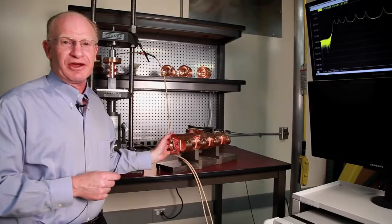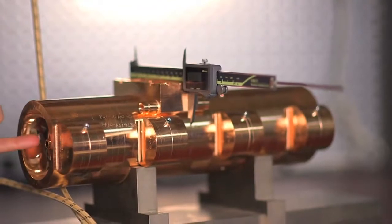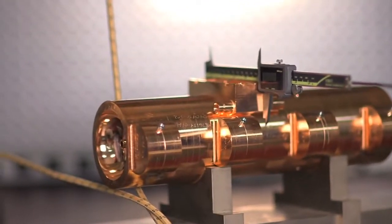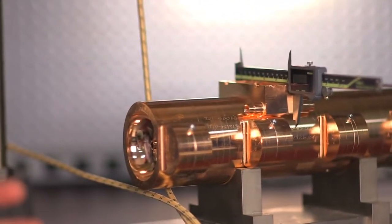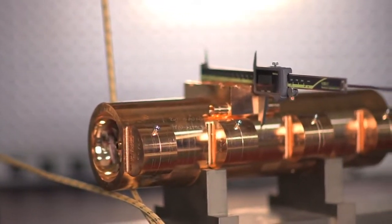So this device right here is the heart of a linear accelerator. Electrons are injected at one end and at the other end they can achieve the speed of light before hitting a tungsten target. And this basic concept was created at Stanford.